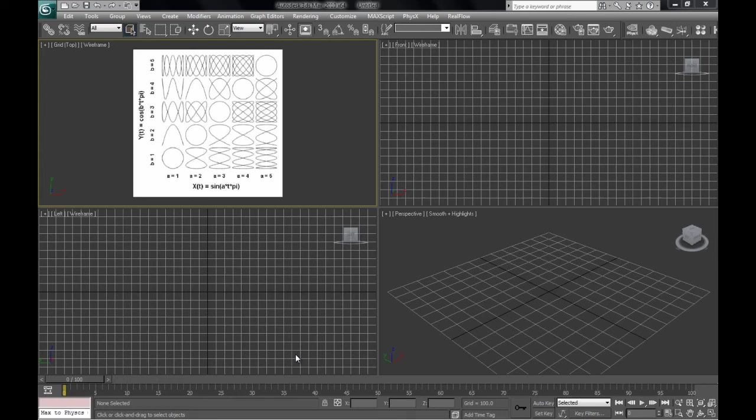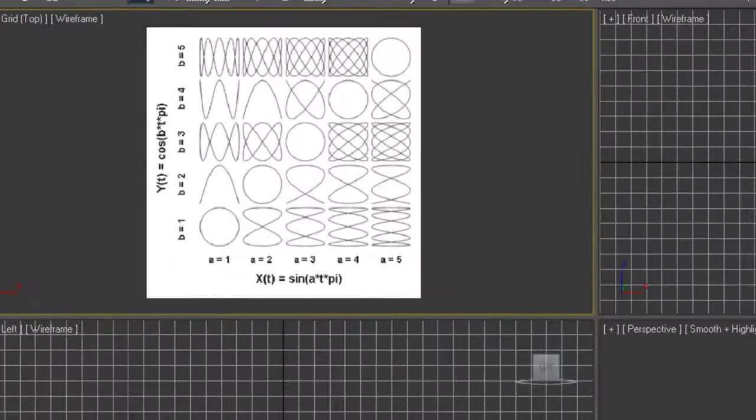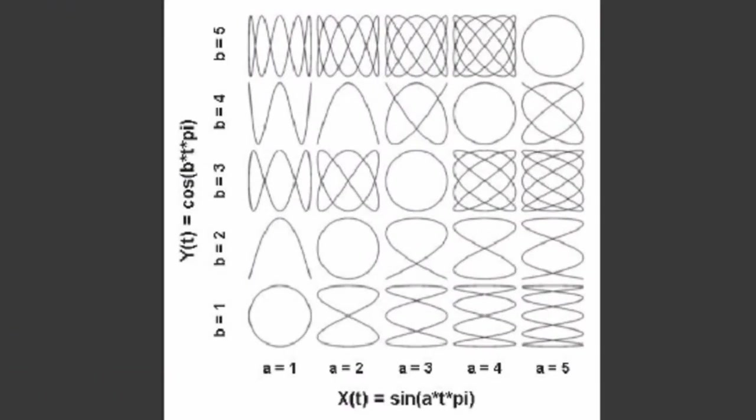It's another time for a TP session where we're going to be plotting trigonometric curves right here. It's going to be fun stuff — you're going to learn about the iterator node and all that kind of good stuff. Let's go ahead and start plotting this stuff and see how we're going to implement this in 3ds Max and TP.